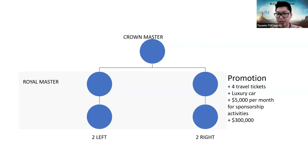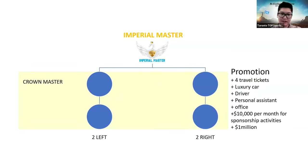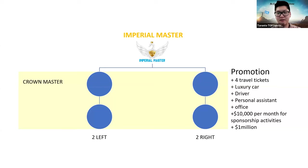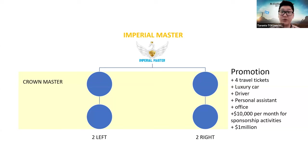At Crown Master: four travel tickets, one luxurious car, $5,000 per month for sponsorship activities, and a $300,000 cash bonus. At Imperial Master — the final level of mastership in Atomy — you receive four travel tickets, one luxurious car, a driver, a personal assistant, an office, $10,000 per month for sponsorship activities, and $1,000,000 delivered to you by forklift. Atomy has given this Imperial Master reward to approximately 14 leaders so far, with some achieving it in around 10 years or even faster.